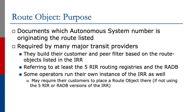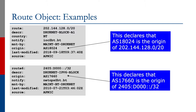Some operators run their own instance of the IRR as well, and they may require customers to place the route object there if the customer is not using any of the registry-hosted ones or the RADB. The slide shows some examples taken from a network operator — a route object with the address space and the origin AS. One example is for IPv4, the other for IPv6.